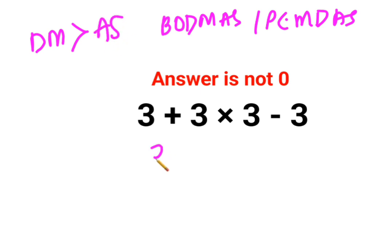So here we will keep 3 plus as it is. First, we will do the multiplication which is 3 into 3 which is 9 minus 3. So 3 plus 9 is 12. Minus 3 gets you 9.